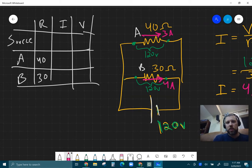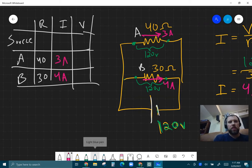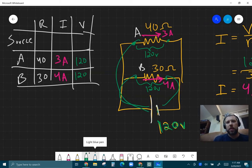They had a current in the B resistor current of 4 amps, and this had a current of 3 amps. And in terms of voltage, they had 120 across both because they're in parallel, and they are both connected directly to that battery, basically.